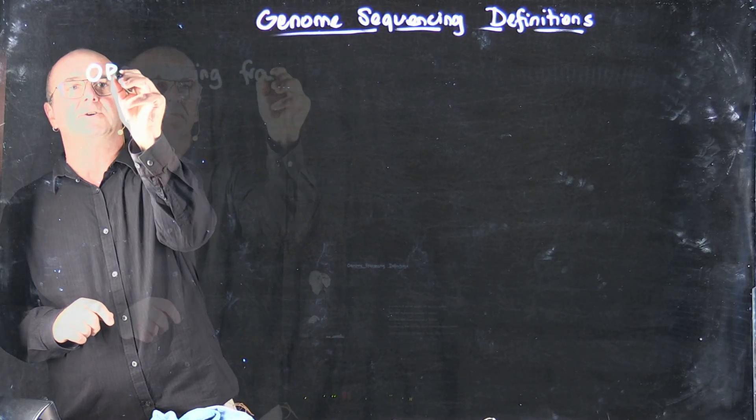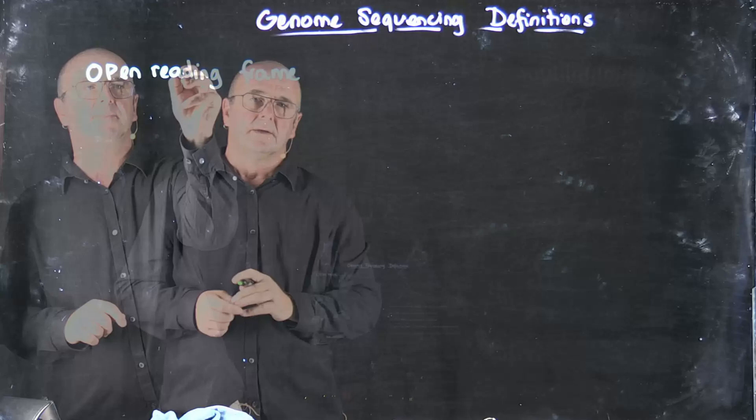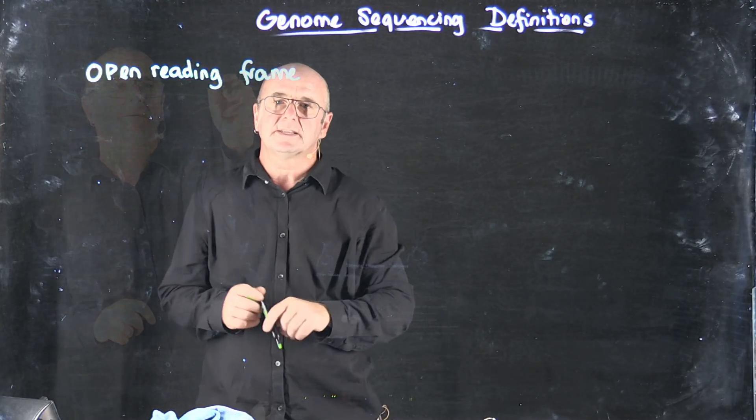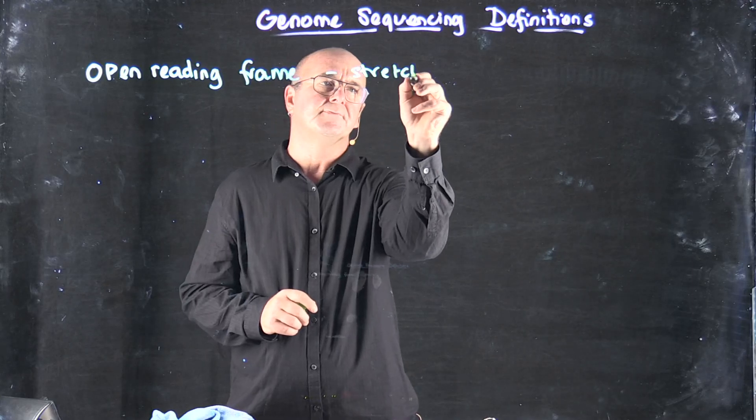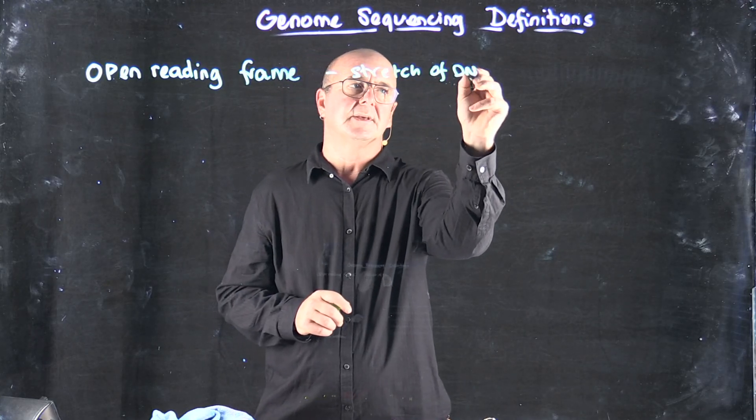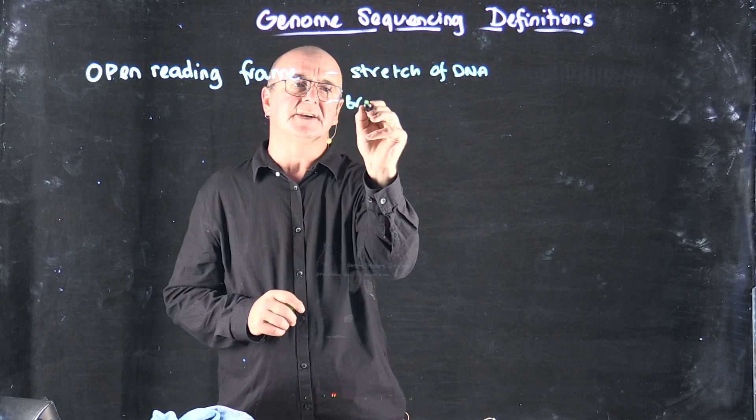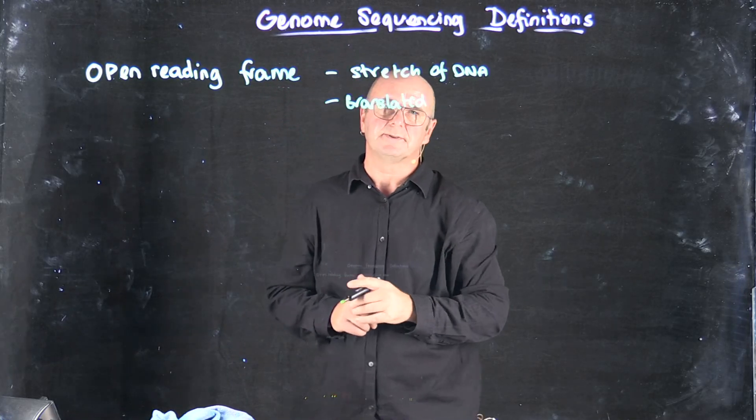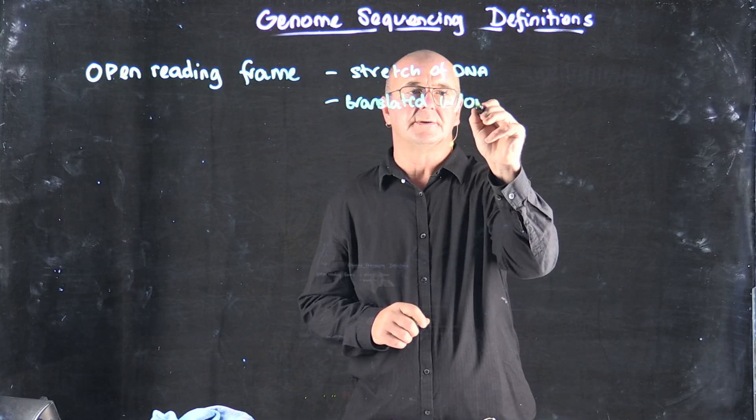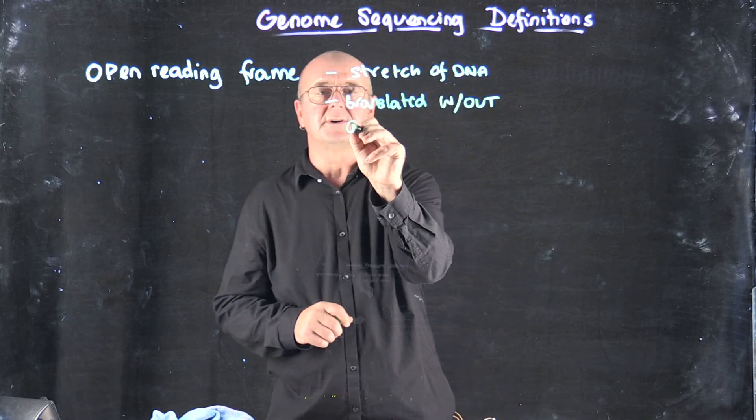The first one is open reading frame. An open reading frame is basically a stretch of DNA that can be translated, so converted to proteins, without a stop codon.